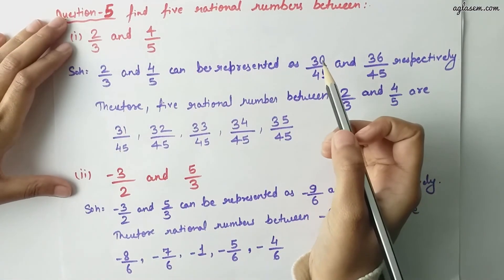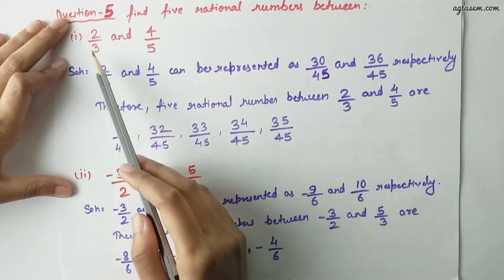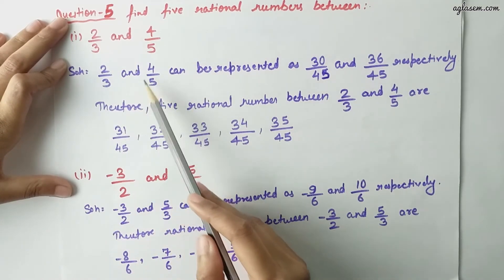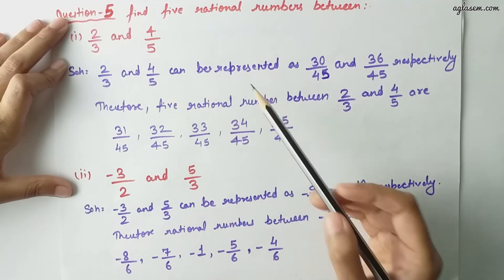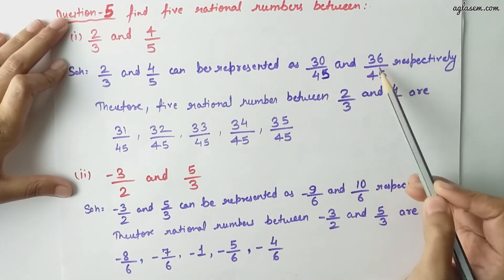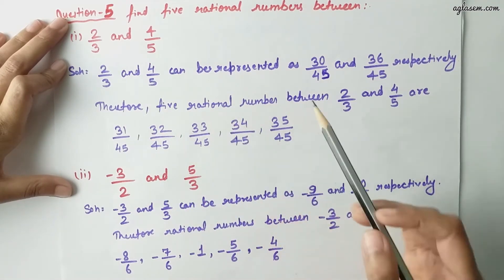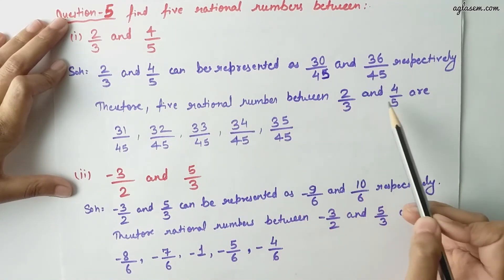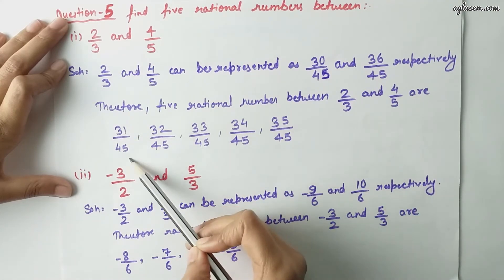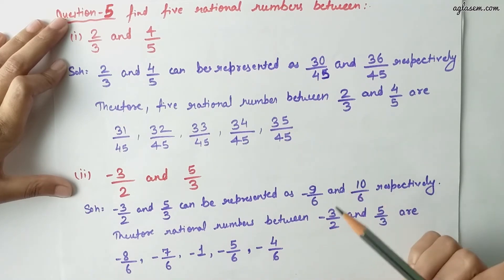Moving to the fifth question: find 5 rational numbers between 2 by 3 and 4 by 5. These can be represented as 30 by 45 and 36 by 45 respectively. Therefore, 5 rational numbers between 2 by 3 and 4 by 5 are 31 by 45, 32 by 45, up to 35 by 45.